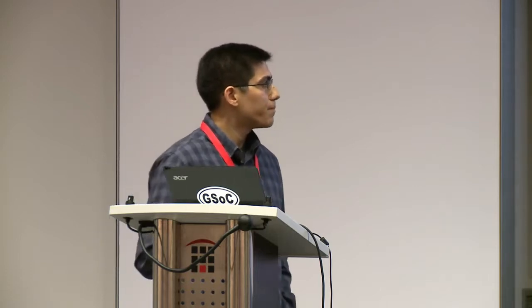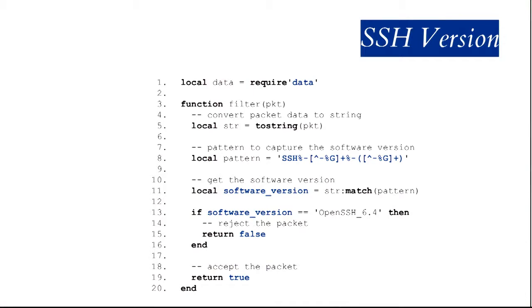And then drop the communication. Here is a script designed to do that job. It just uses the Lua string library to match the version of the SSH protocol. And if the version is the vulnerable version, it drops the packet. Otherwise, it lets the packet pass through the network.